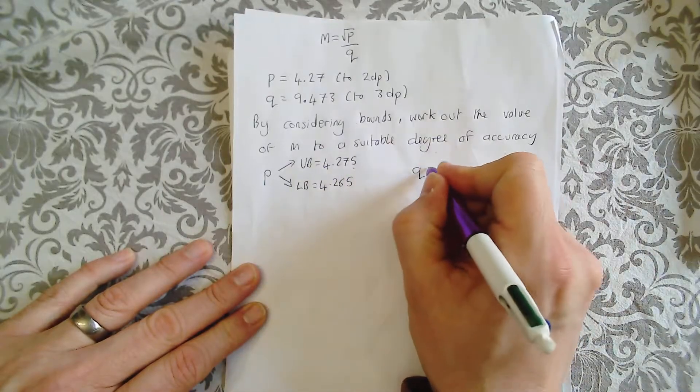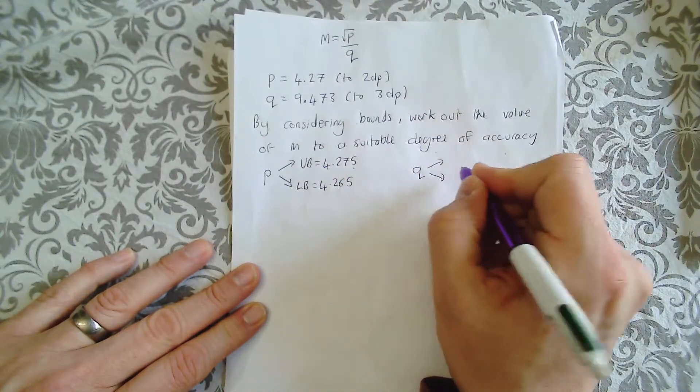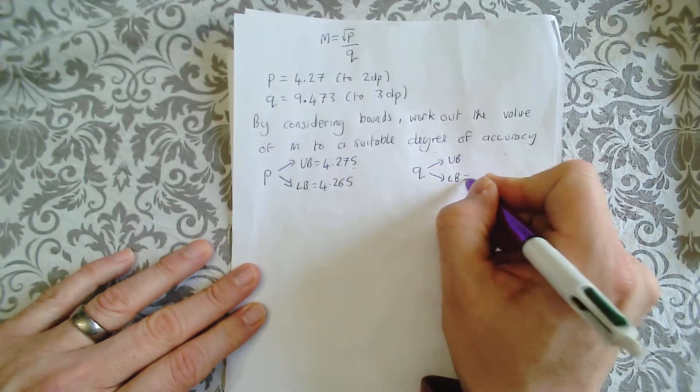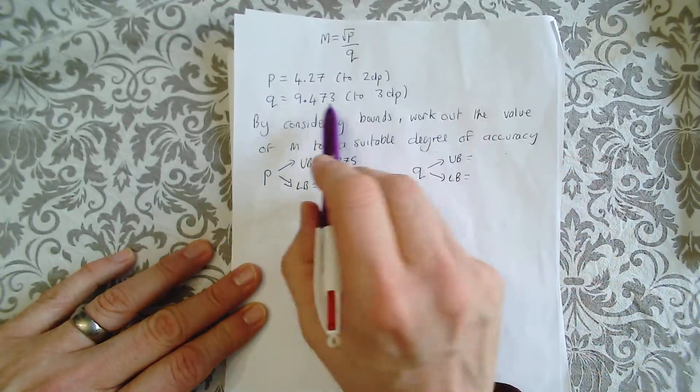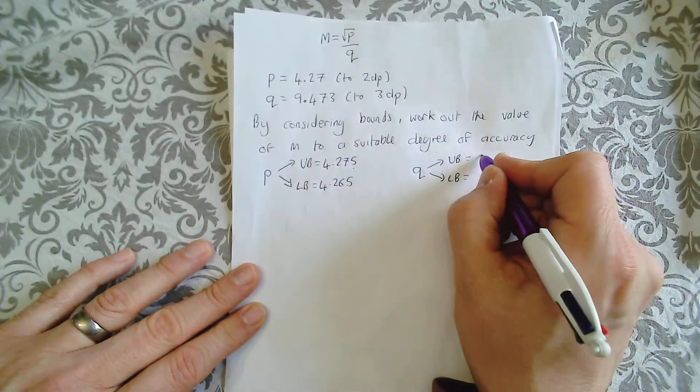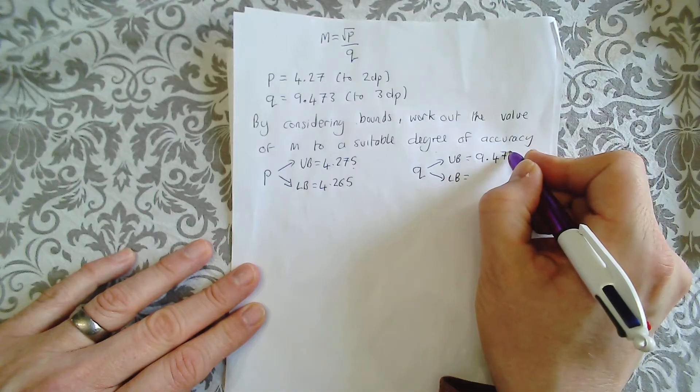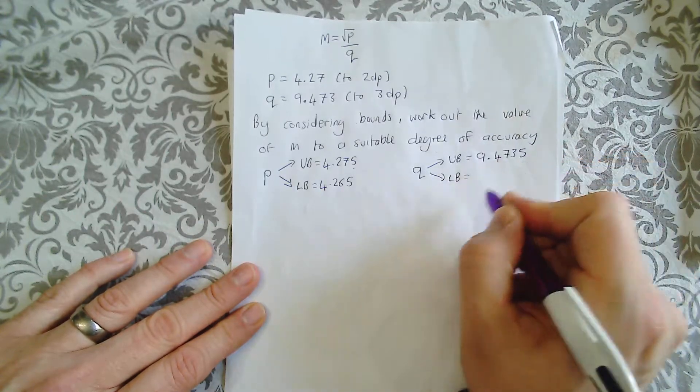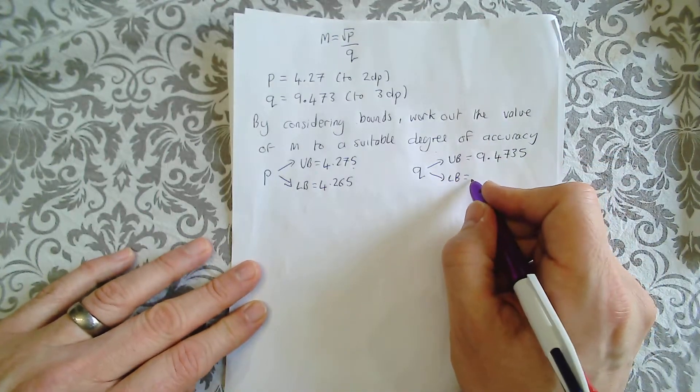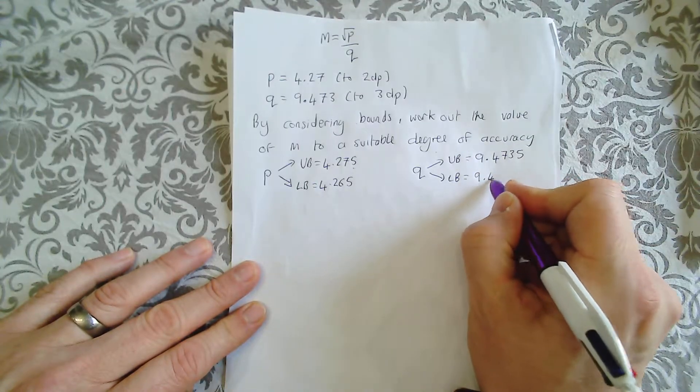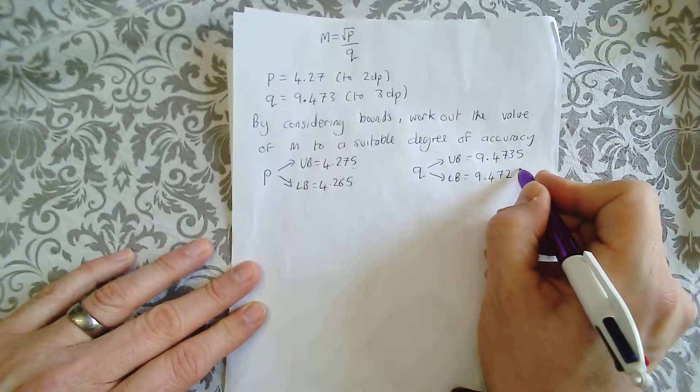I do the same for Q. Now Q has an upper bound and a lower bound to four decimal places because this is to three decimal places. 9.4735 is the upper bound and the lower bound would be 9.4725.